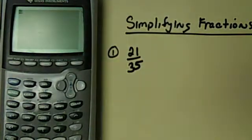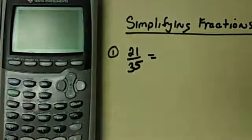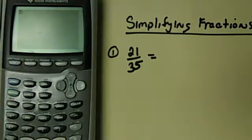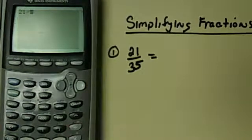Now we do know in our head that 21 over 35, that 7 goes into both of them, and we should be able to get the answer. 21 divided by 7 is 3, and 35 divided by 7 is 5, but we want to get it in the calculator. So to reduce any fraction, you can put the fraction in directly, 21 divided by 35.